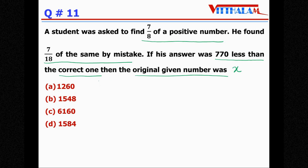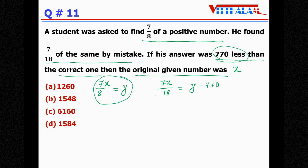He was asked to find 7x/8 — that's the correct answer, let's call it y. But what he did was 7x/18, and that wrong answer was 770 less than the correct one, meaning it equals y minus 770. We know y = 7x/8. Substituting: 7x/18 = 7x/8 − 770.